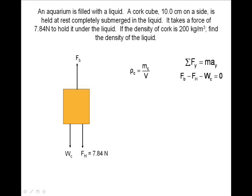Here is the density formula for our cork. We rearrange to find the mass. We substitute in our values with the volume of the cube equaling side cubed. Now we have the mass.